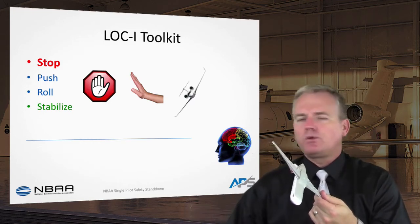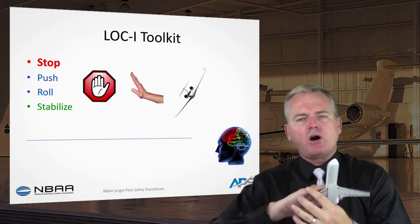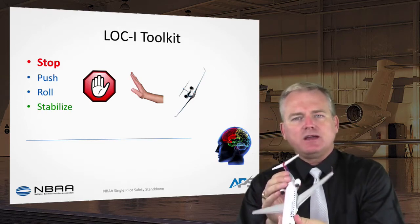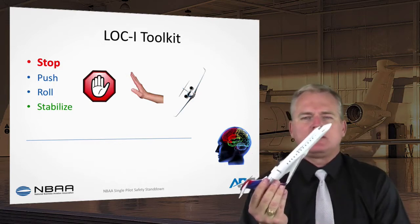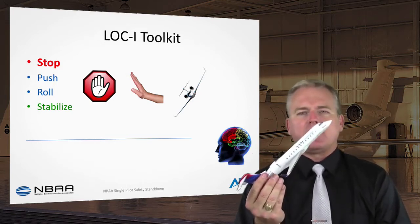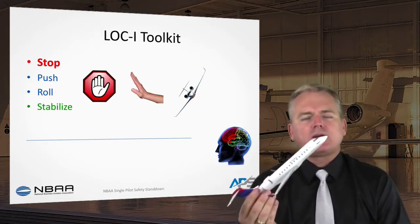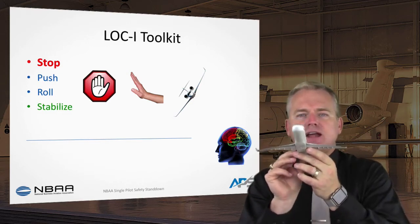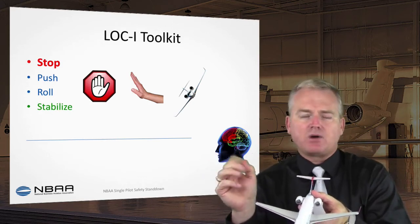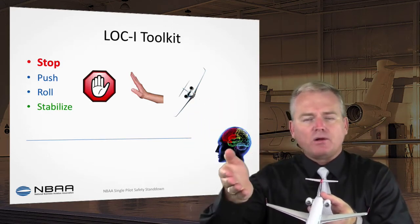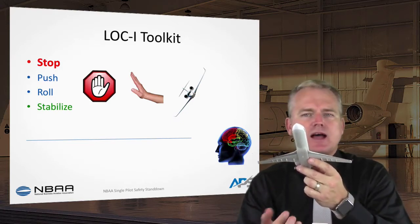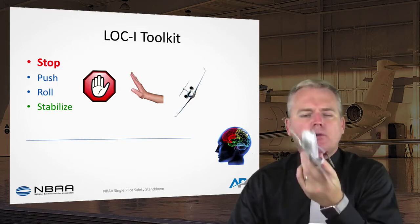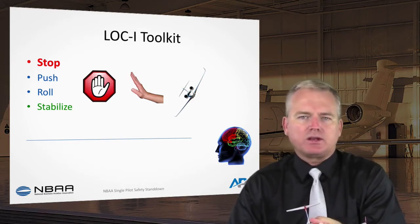We may end up in a bad attitude — as in the Colgan situation where a stall led to dynamic roll instability and the airplane became over-banked — but we must push and solve the stall first. The next step is 'Roll.' In a stall with a roll-off, we push to reduce angle of attack, then reorient the lift vector and roll back to wings level. In a nose-high situation, the primary threat is a nose-high stall, so we push first.